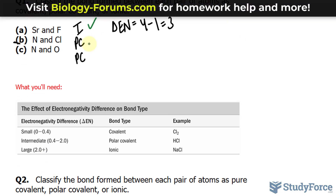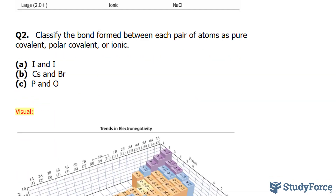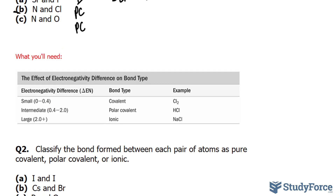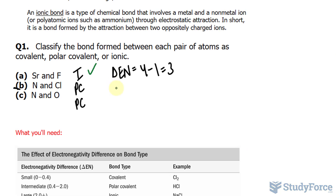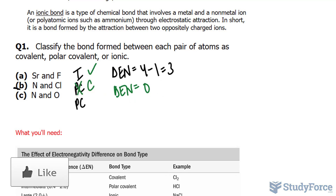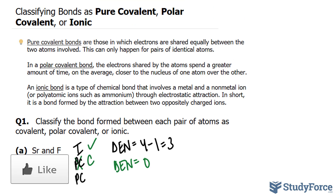Next, we have nitrogen and chlorine. Nitrogen is three and chlorine is also three. Three minus three is zero, so delta En is equal to zero. When it's zero to 0.4, it's actually covalent. So our guess was incorrect — it's actually covalent. This is why the definition isn't always true, where pure covalent can only happen for pairs of identical atoms.